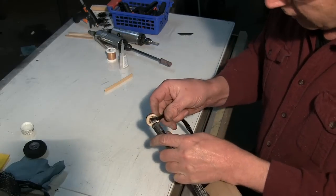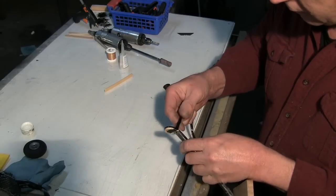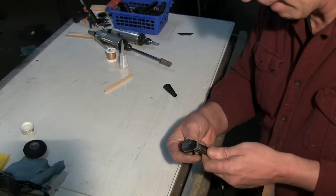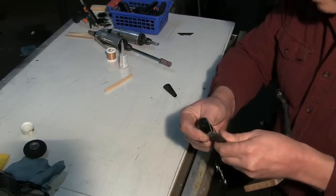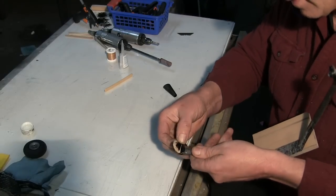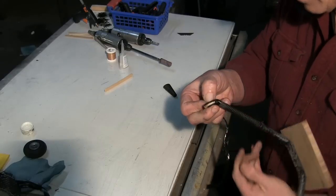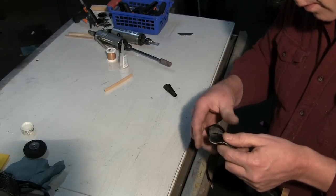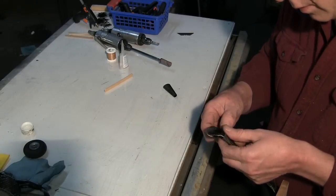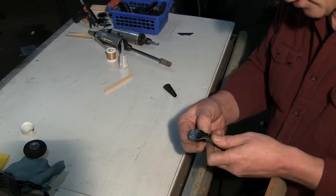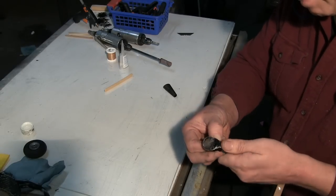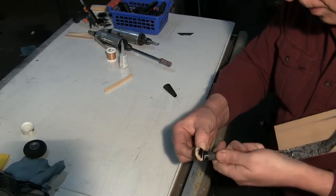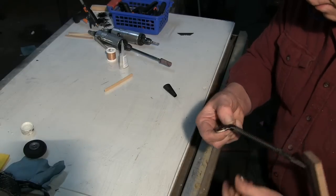I'm going to take a popsicle stick and basically just stick it down mainly so I don't get super glue all over my hands. Get that stuck on there like that. Now I'm basically just going to wrap this. Oops, got some super glue on my fingers. So come in here.